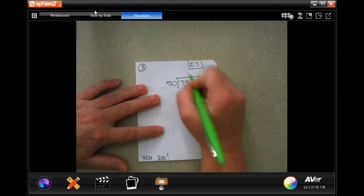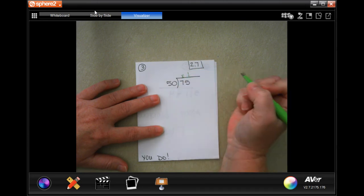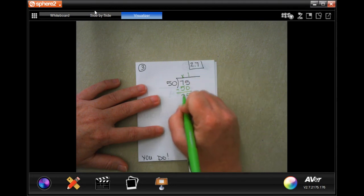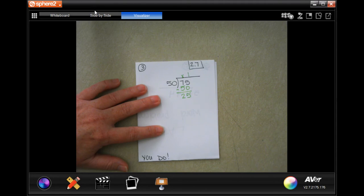So, one time. Oh, I didn't put my placeholder in. Look at that. 1 times 50 is 50. So, when I subtract, I get 25.